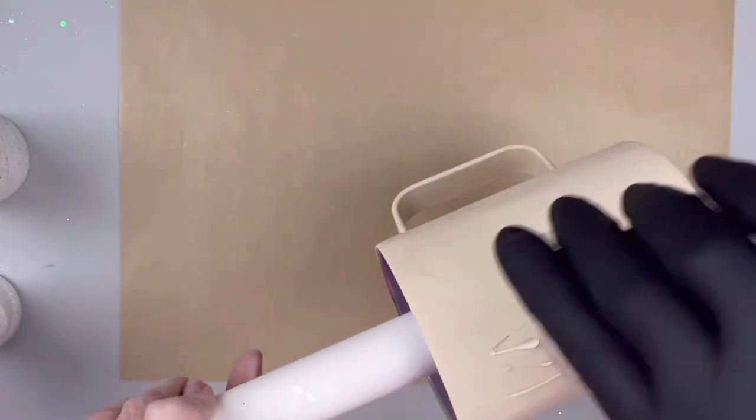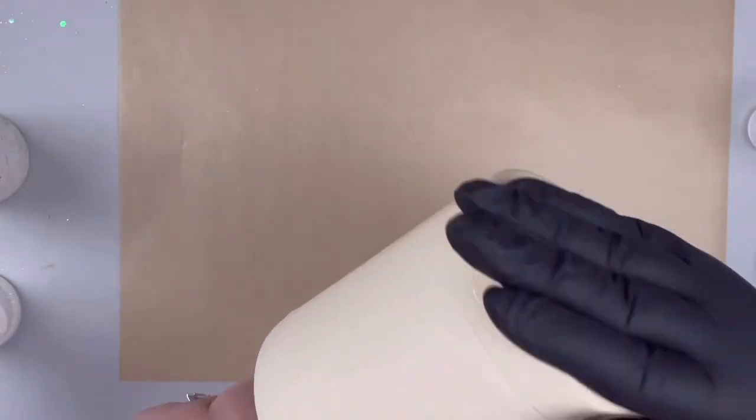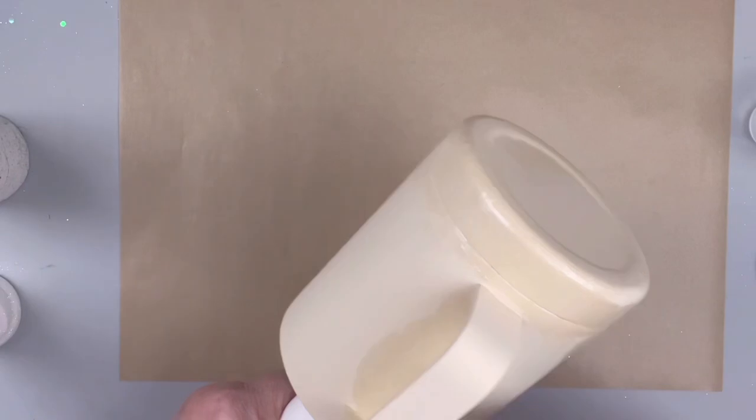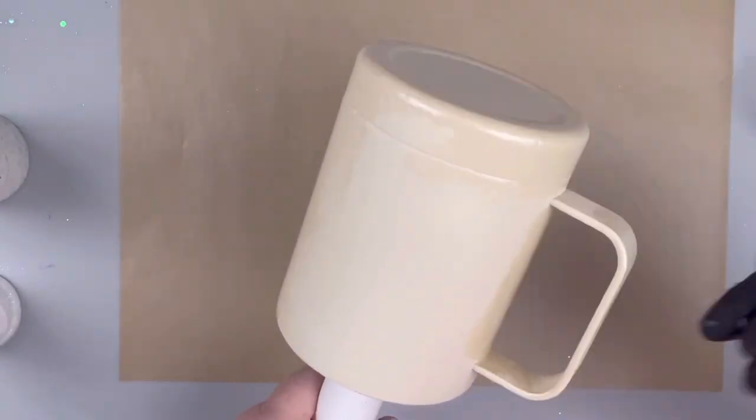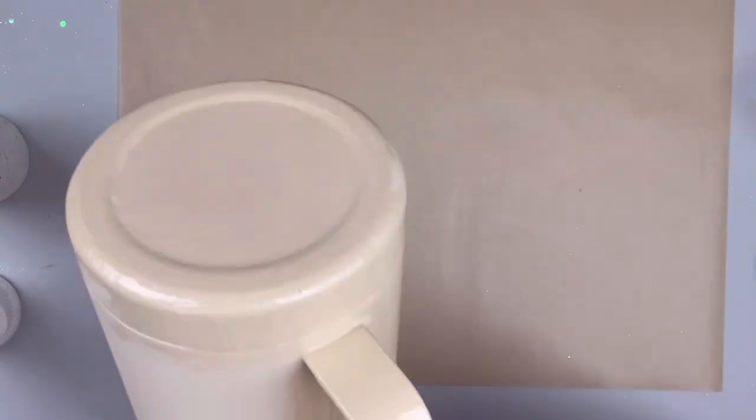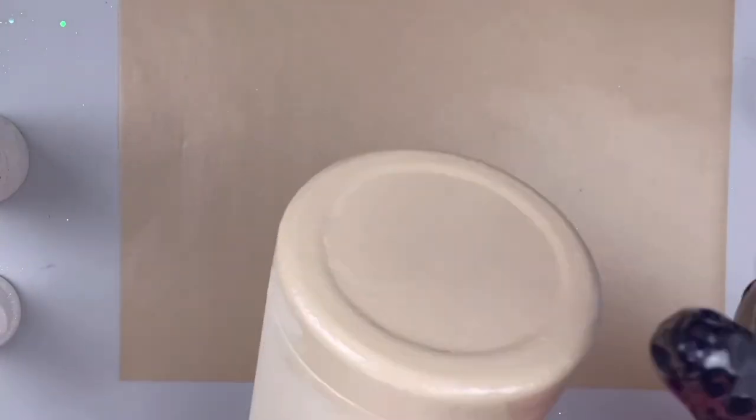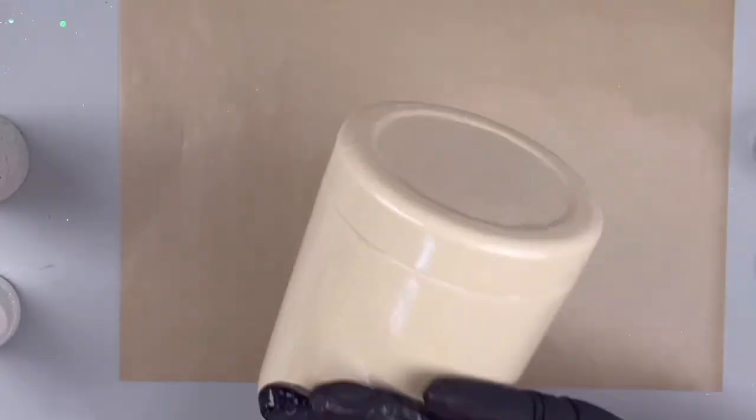And once that's dry, I'm going to put just a little bit of epoxy on there and put it all over the tumbler, a very thin coat so that we can glitter. And so I'm paying special attention to the handle. You don't want it to glob up around there. Once I get all of that smoothed on, then we'll move into glittering.